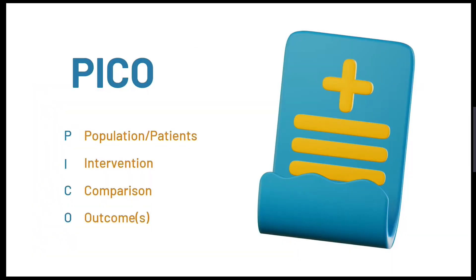As with many quantitative studies, a useful tip to help you with appraising studies is to write out a PICO. This captures the key points of the study and can assist you with appraising validity and reliability. PICO stands for P for population or patient, I for intervention, C for comparison, and O for outcome or outcomes — essentially the who, what and why for the study.